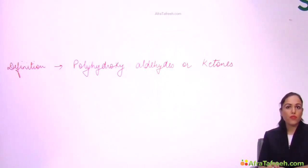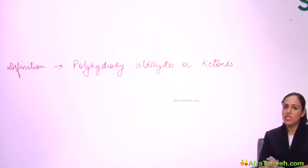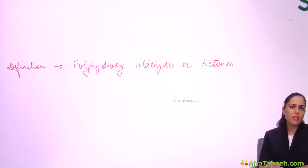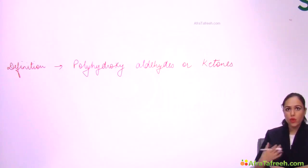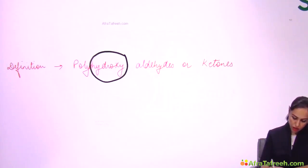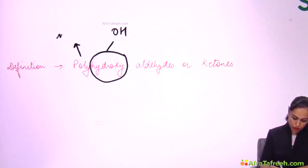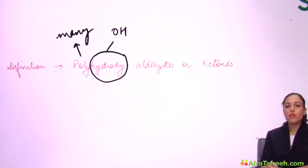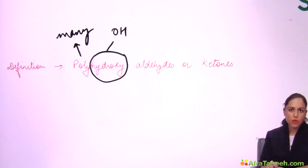Now, coming to the definition of carbohydrates: carbohydrates are polyhydroxy aldehydes and ketones. There are a few key words in this definition — I'll take each one and explain several points from it. The first word is 'polyhydroxy': hydroxy means OH group, and poly means many. So carbohydrates have many OH groups.